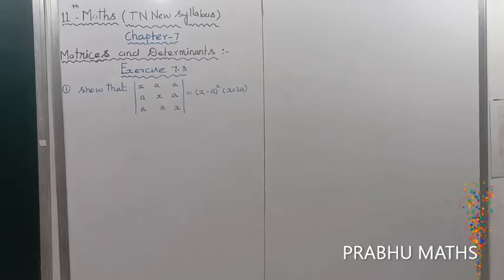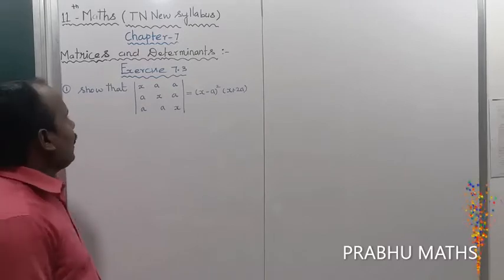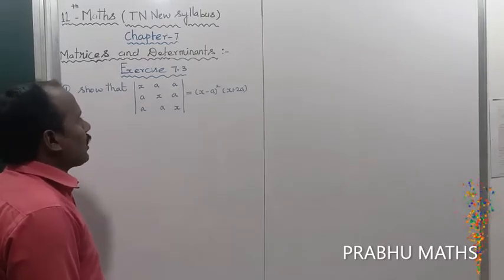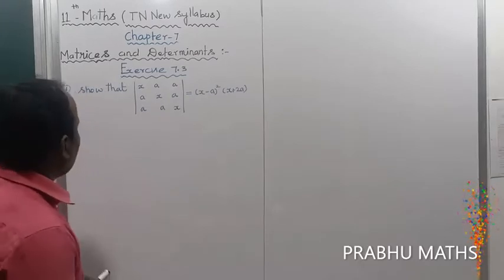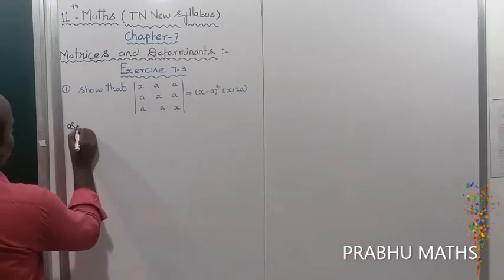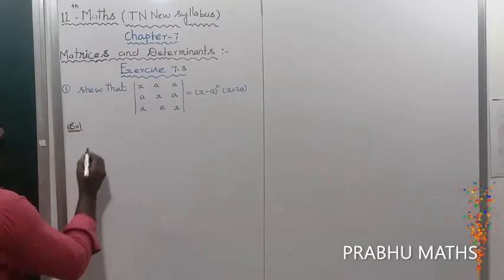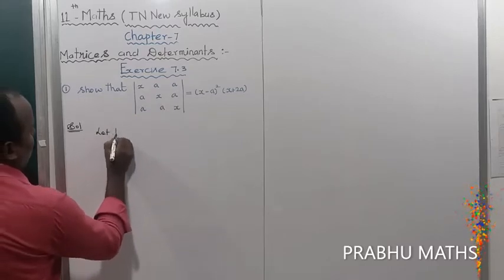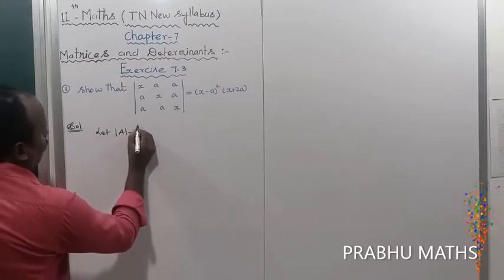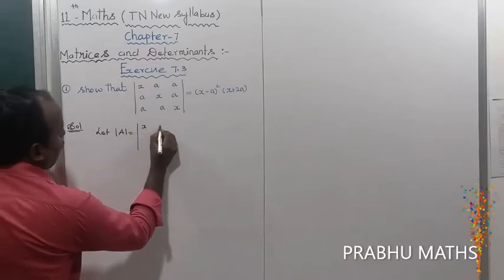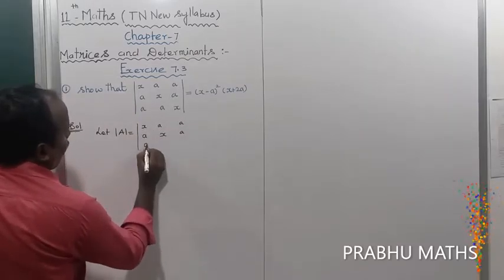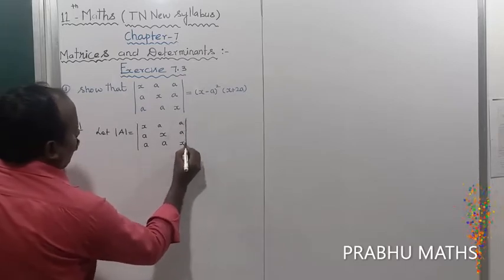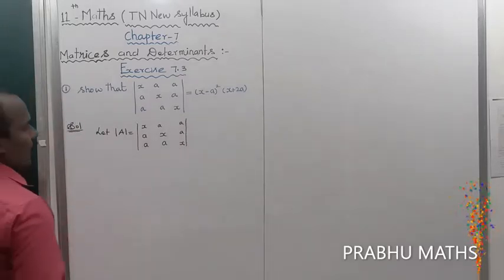Exercise 7.3, first sum: show that the determinant of x a a / a x a / a a x equals (x minus a) whole square times (x plus 2a). Let us consider the given determinant, which is equal to the matrix with entries x a a / a x a / a a x.